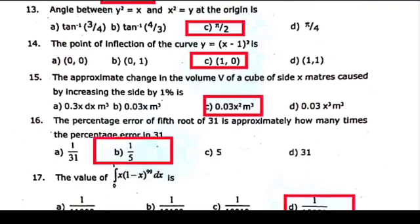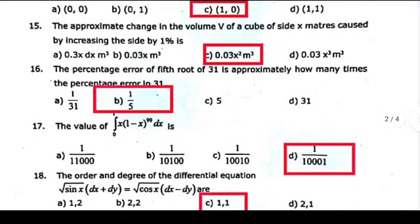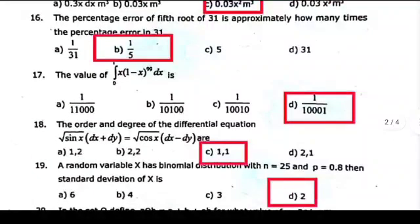Fifteenth, option C, zero point zero three x square m cube. Sixteenth, option B, one by two, five. Seventeenth, option D, one by ten thousand and one.